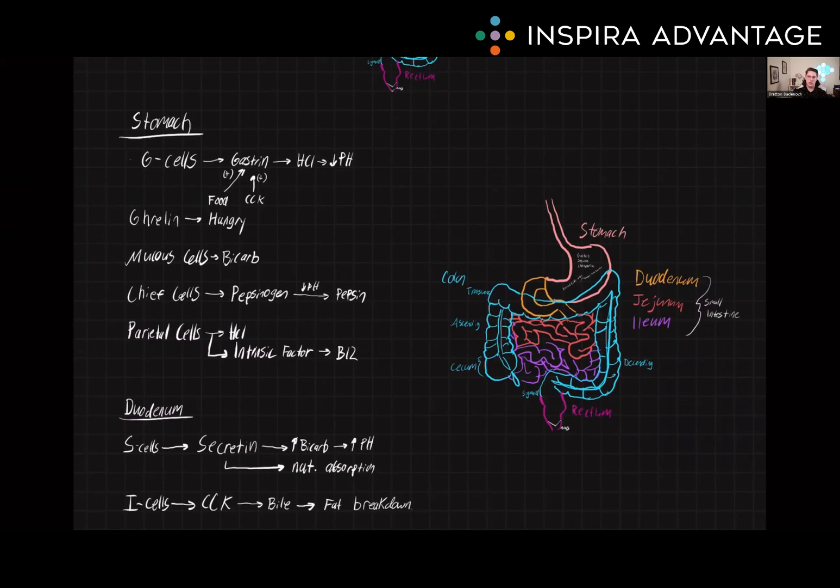These hormones work together in a coordinated fashion to regulate the digestive process and ensure that food is broken down and absorbed at the appropriate rate. For example, when food enters the stomach, it stimulates the release of gastrin,